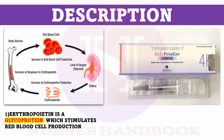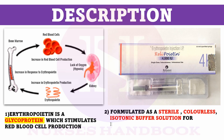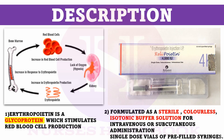Recombinant erythropoietin, which is known as erythropoietin stimulating agents, is a man-made version of natural erythropoietin. It is formulated as a sterile colorless isotonic buffer solution which can be administered intravenously or subcutaneously. These injections are available in pre-filled syringes.